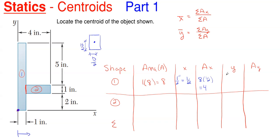Now for the vertical Y direction: the individual centroid for a rectangle is just half its height. So it would be eight divided by two, which gives me four inches. Then A times Y would be eight times four, which gives me 32.